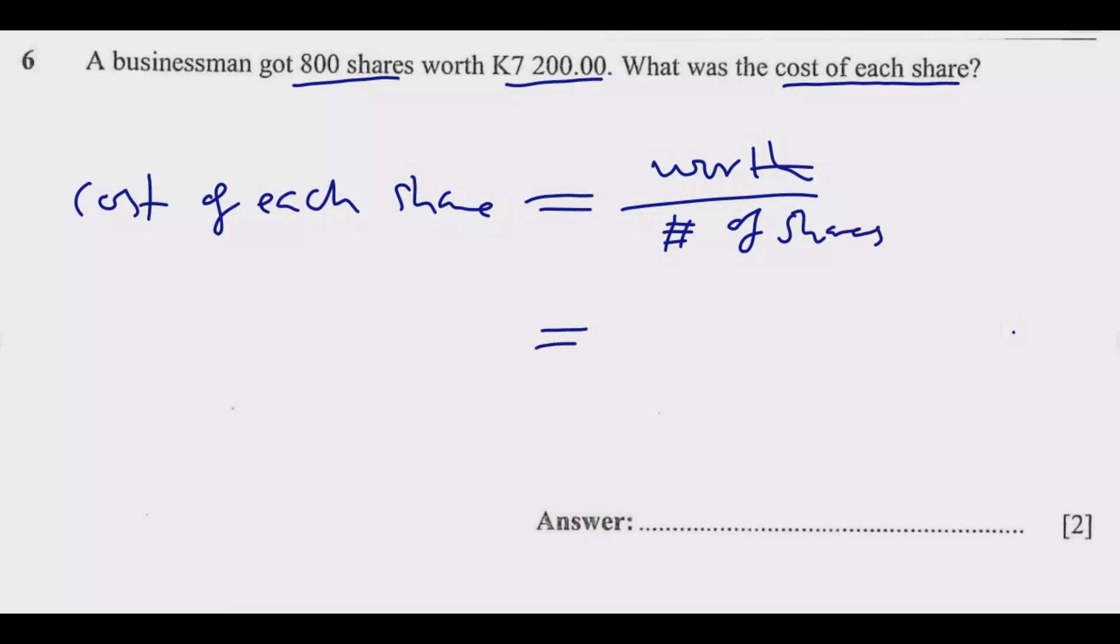Just as simple as that. So 7,200 divided by 800 is just a matter of division here.